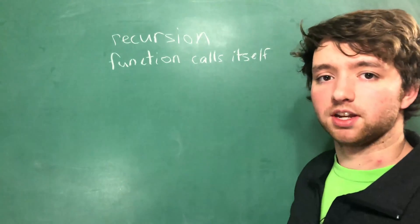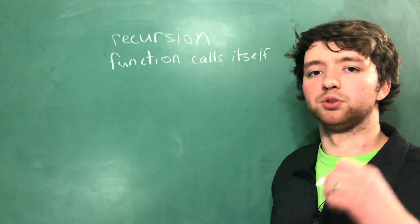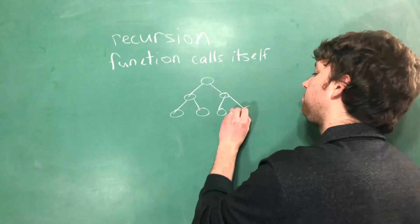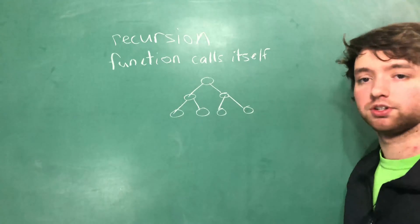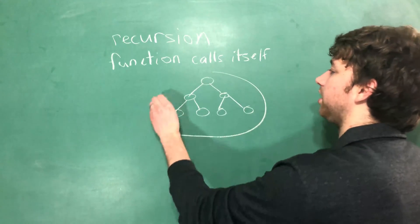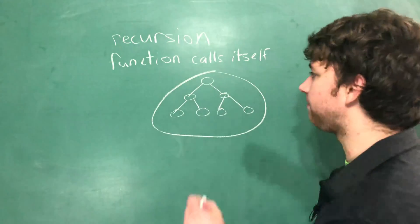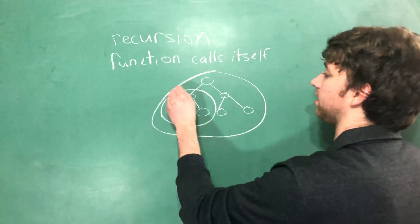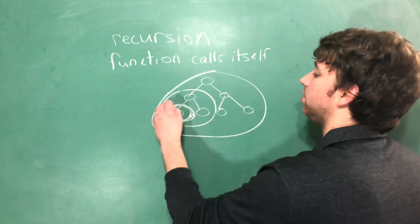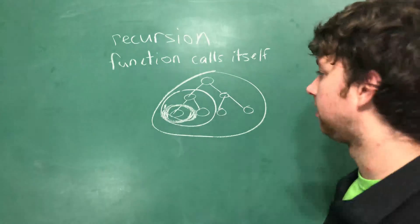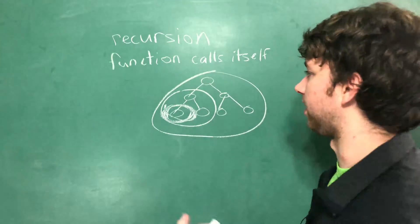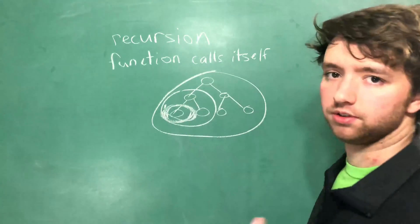If you think of having a tree that branches a bunch of times, we may not know how many times it branches. So you can think of calling a function on the whole tree, which then calls the same function on a smaller piece of the tree, which then calls it on a smaller piece, which would then be the smallest piece — and then it's going to go back up and finish out the function.